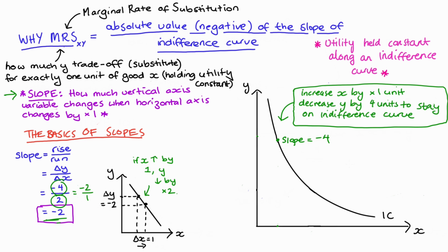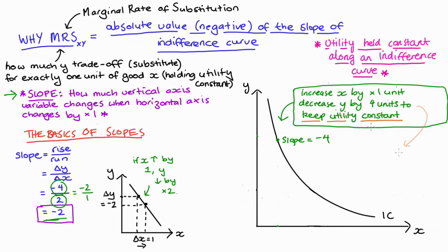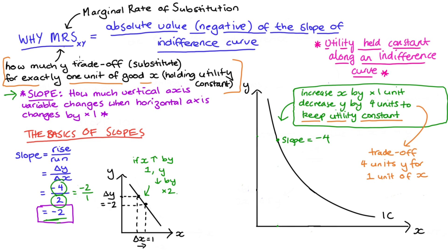Critically though, an indifference curve maps out all of the bundles between which a consumer is indifferent, meaning the level of utility is held constant as we travel along our indifference curve. So going back to the point where our slope is negative 4, this slope is telling us that if we increase our consumption of good x by 1, we would decrease our consumption of y by 4, and that would keep our utility constant. To say this another way, at this point the consumer trades off 4 units of y for exactly 1 more unit of x.